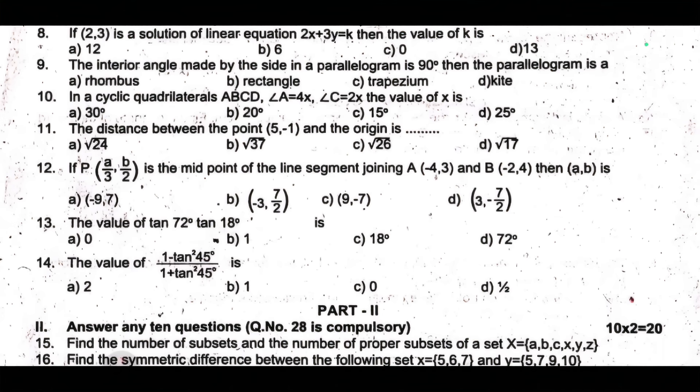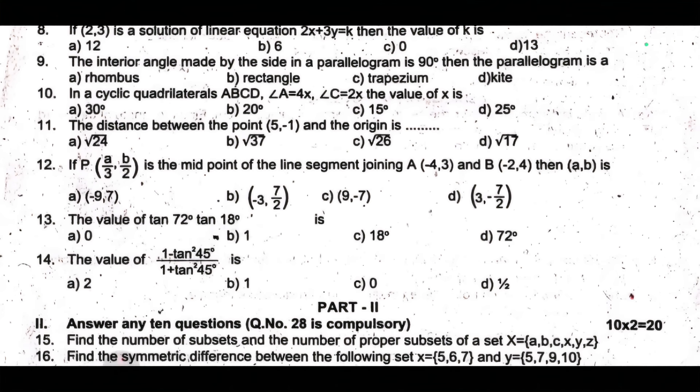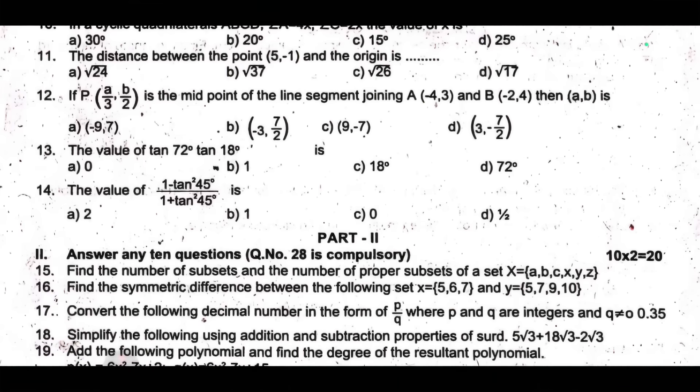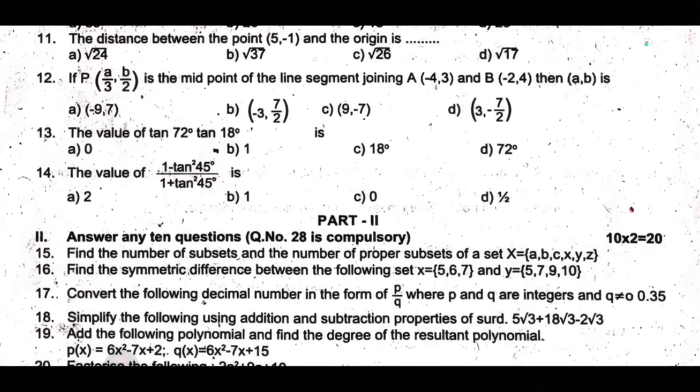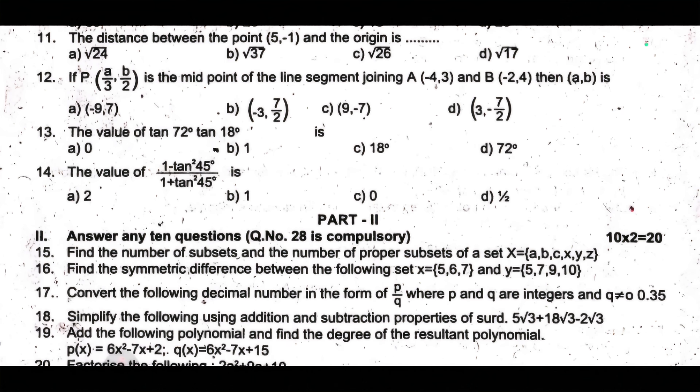Eleventh one, the distance between the point (5, -1) and the origin is dash. Twelfth one, if P1 is (a/3, b/2a) is the midpoint of the line segment joining A(-4, 3) and B(-2, 4), then ab is dash. Thirteenth one, the value of 72 degree than 18 degree dash. Fourteenth one, the value of 1 minus tan square 45 degree by 1 plus tan square 45 degree.